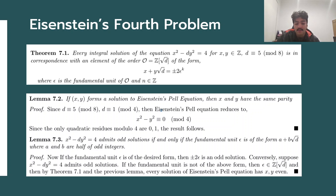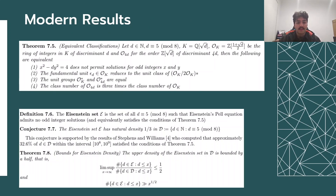These observations lead to a modern result of Stephen Hagen relating to equivalent conditions of Eisenstein's fourth problem. A theorem of odd classification shows that if Eisenstein's Pell equation x squared minus dy squared equals to 4 does not admit solutions for odd integers x and y, then it is equivalent to the following conditions.